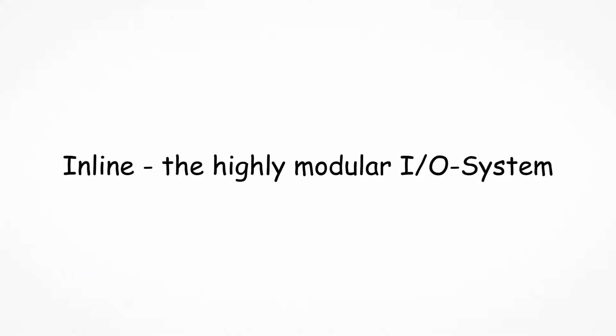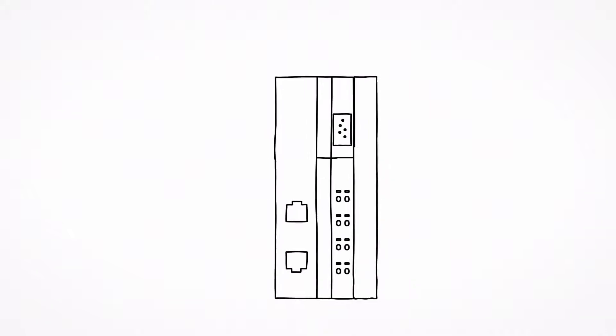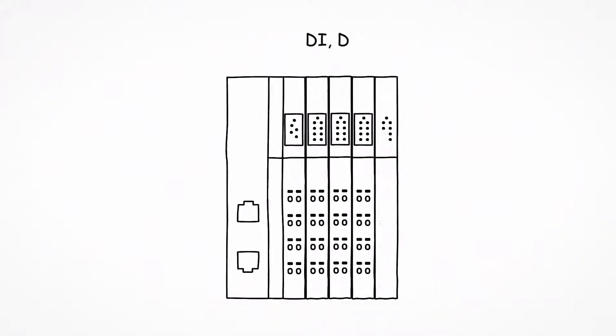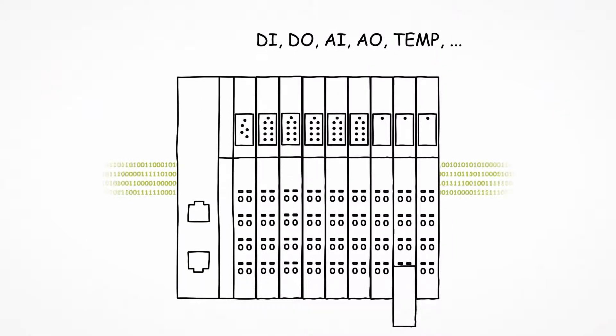Inline is the highly modular I.O. system for your control cabinet from Phoenix Contact. The Inline I.O. system consists of a bus coupler and alignable I.O. terminals that exchange data flexibly between one another via a local bus.